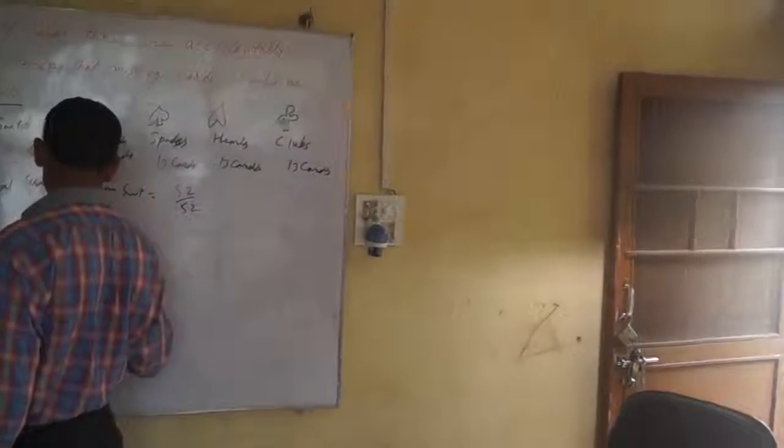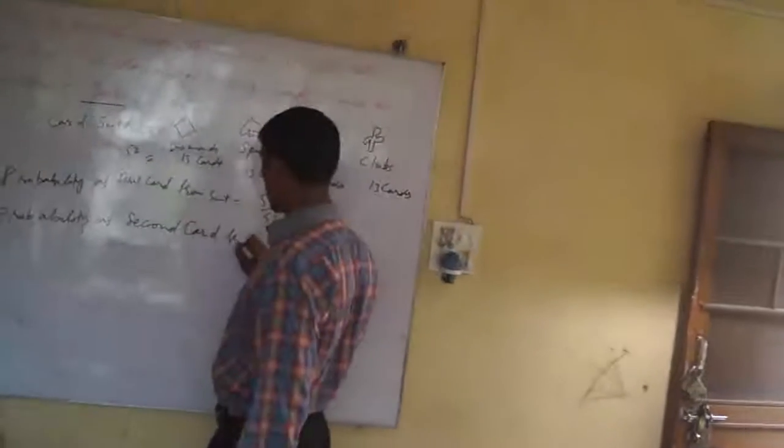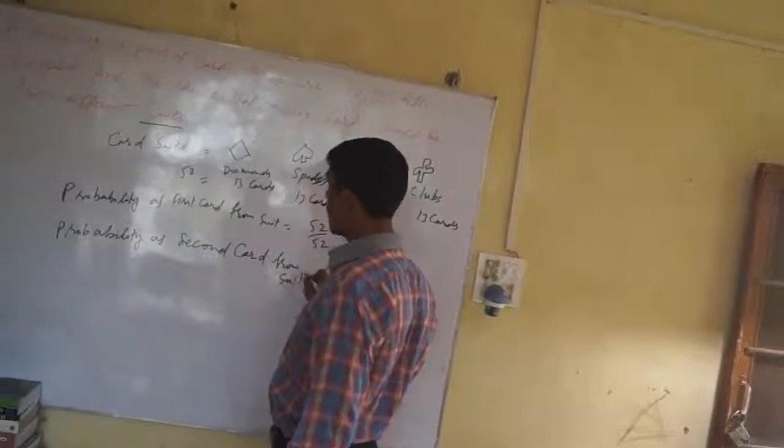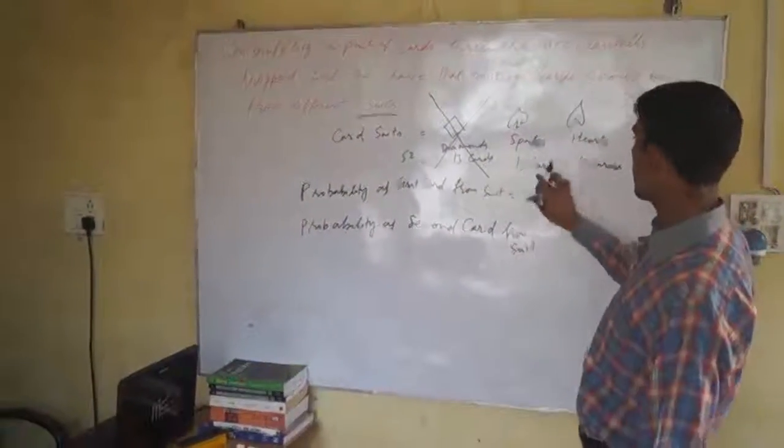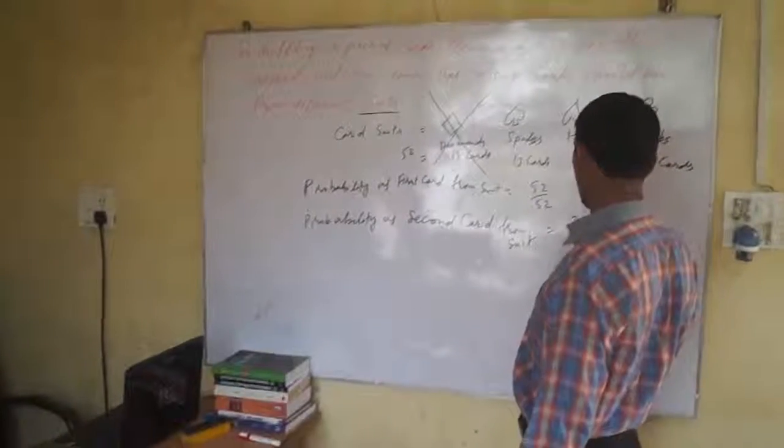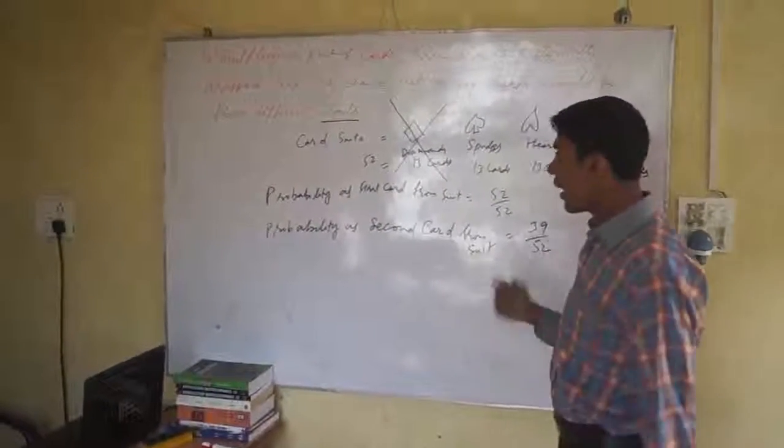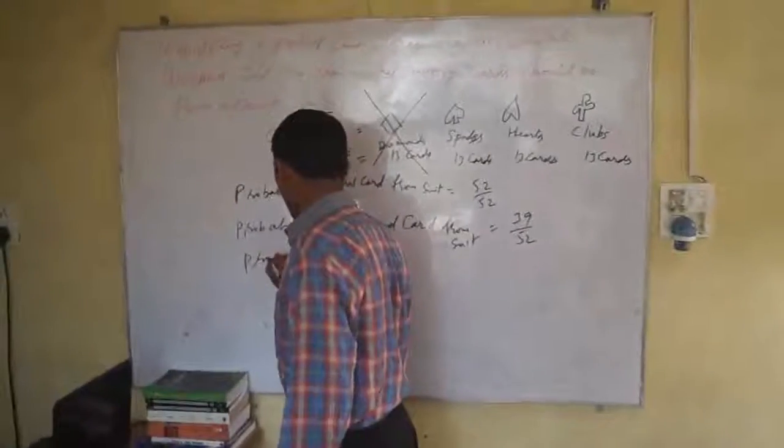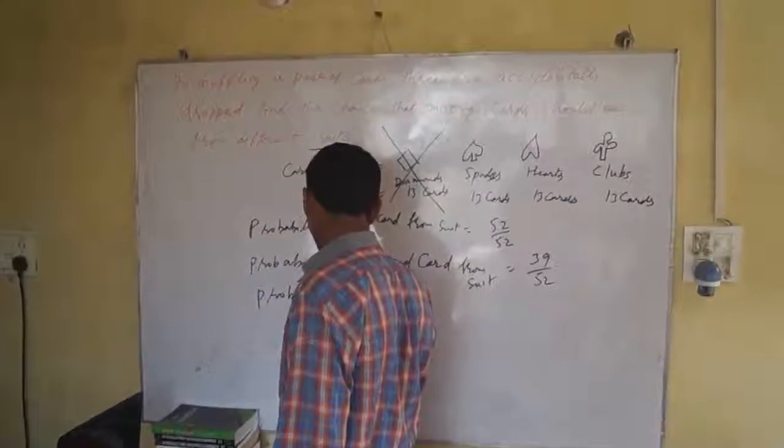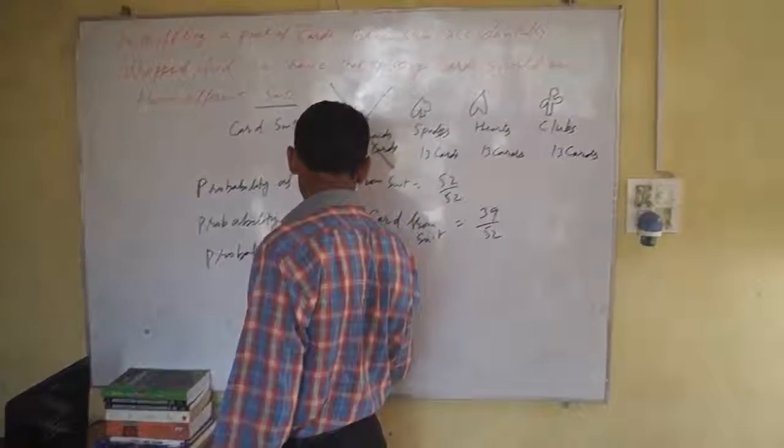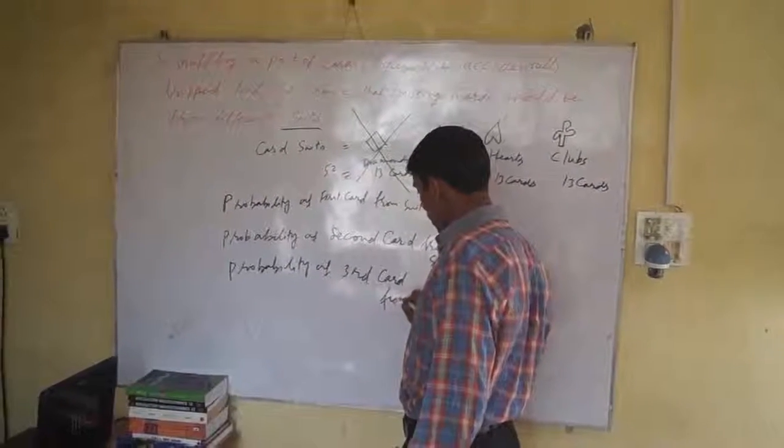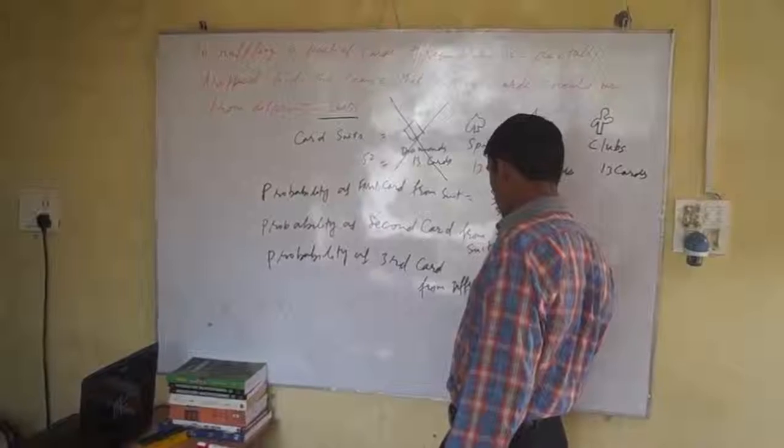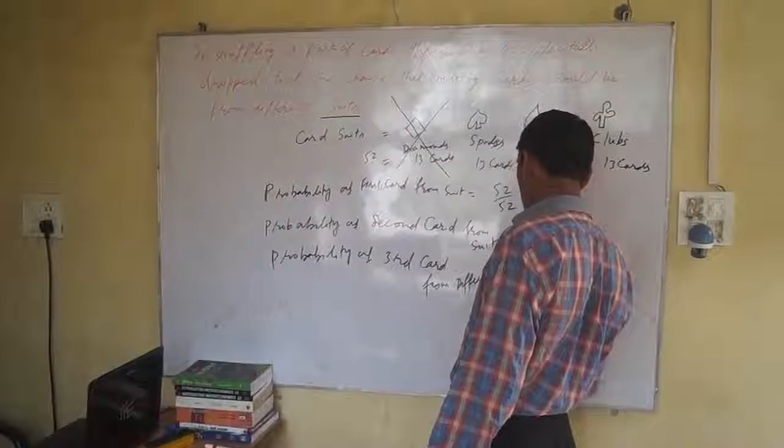Suppose we are taking this card from this side. We have cut this, so there is 13, 13, 13, 13. These are 39 divided by 52. And probability of third card from different suits, from different category suits...